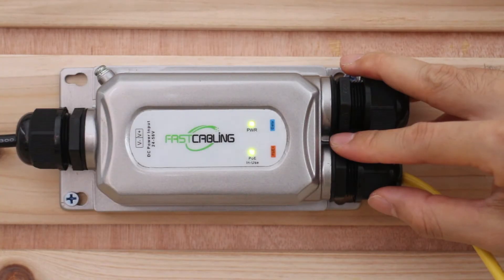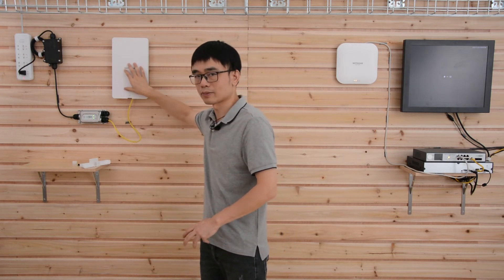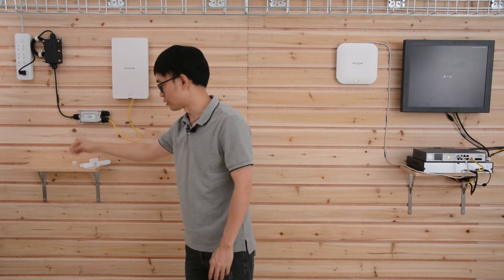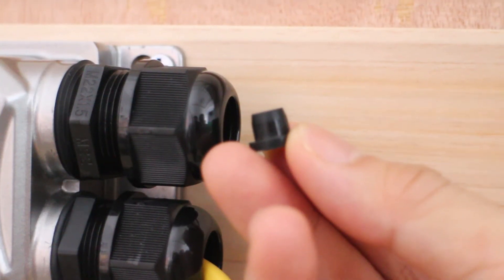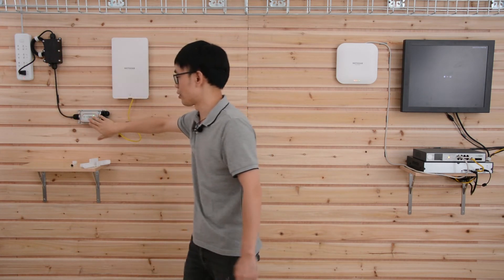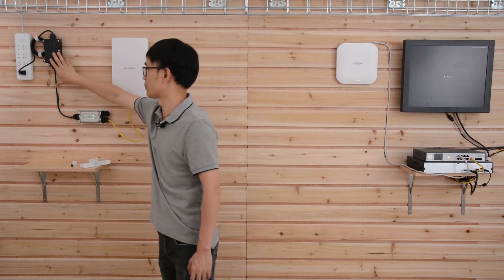This is the outdoor PoE injector. The only purpose for this injector is to power this outdoor access point. So we don't need the data from this PoE injector. We need to use this rubber to block one of the data ports. And you also may see, this power source is separated from this PoE injector. What is the purpose? Why do we need to separate this power source?